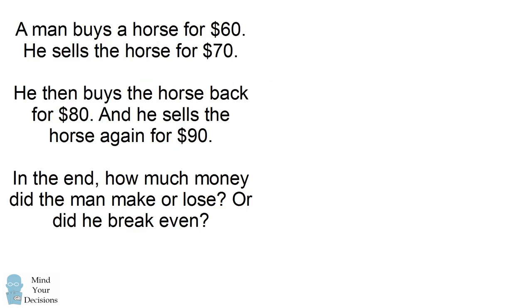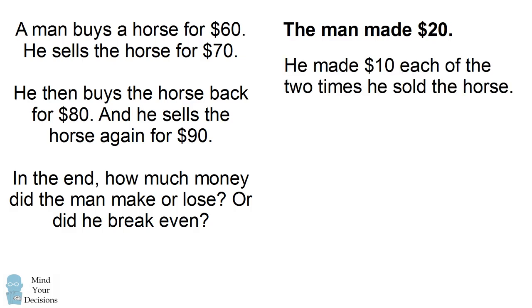The short answer is the man made a profit of $20. He made $10 each of the two times he sold the horse, for a total of $20 profit.